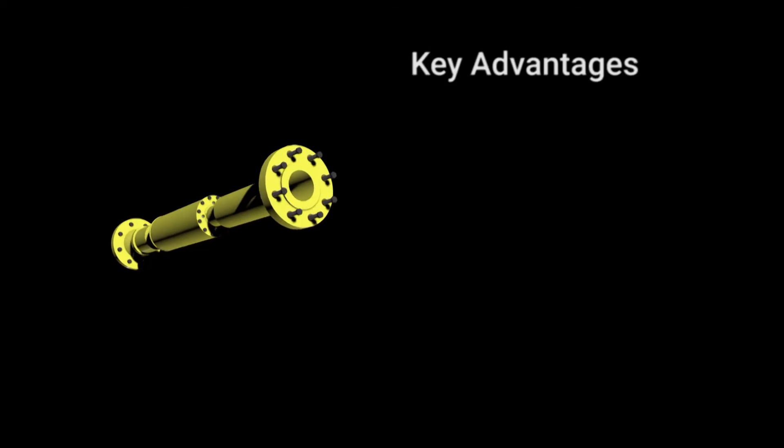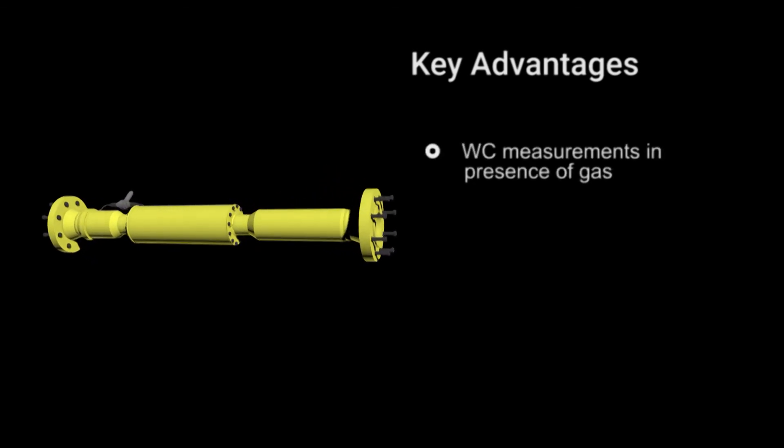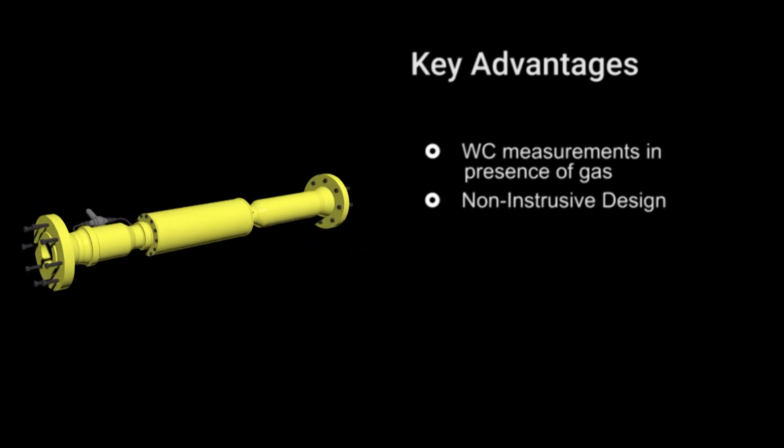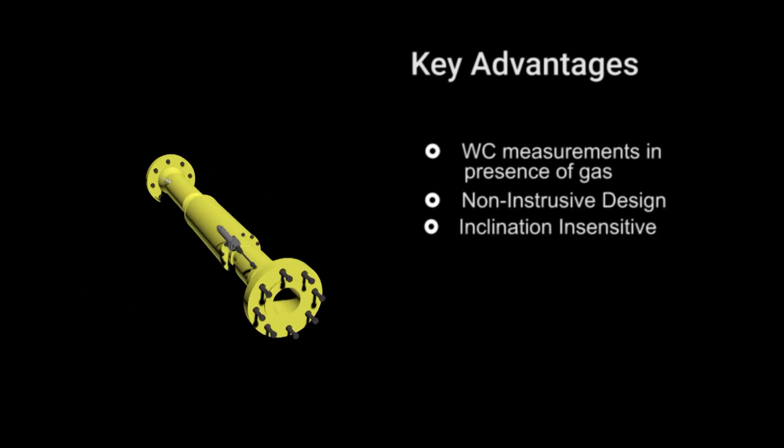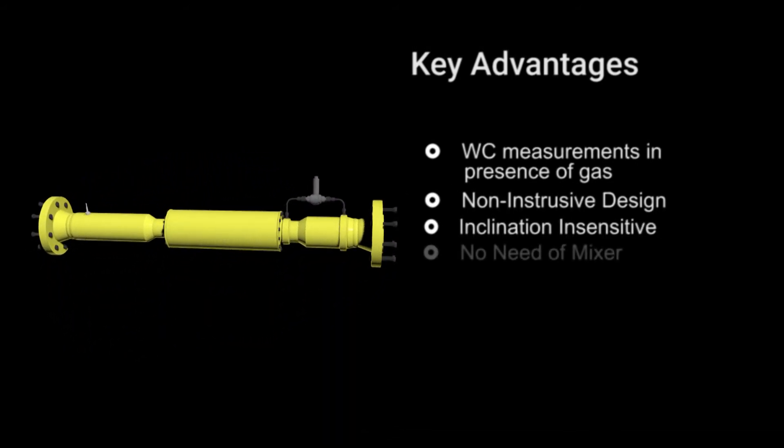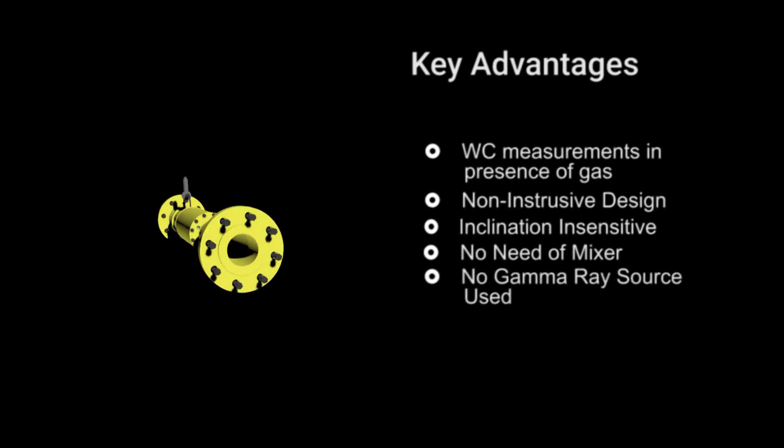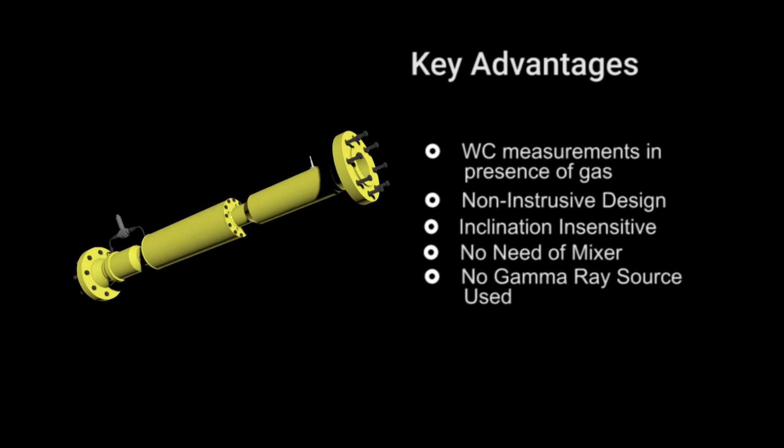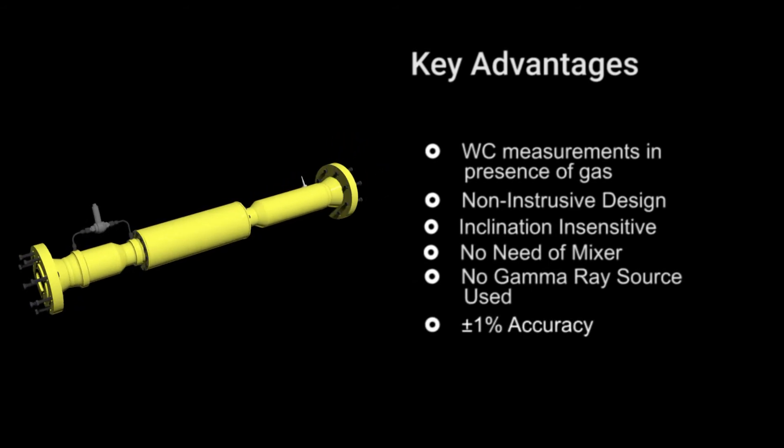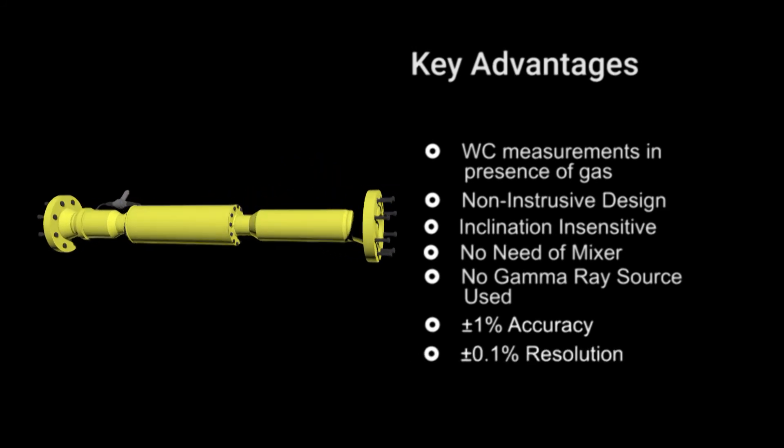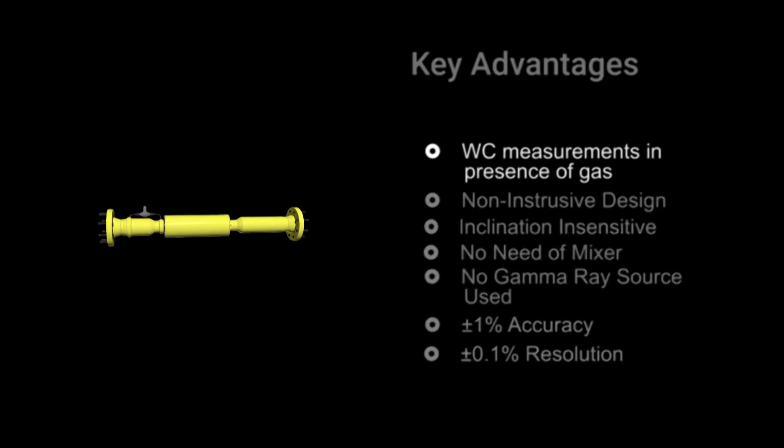To summarize, Waventuri offers many key advantages including the operation over full range of water cut without intruding the flow. Waventuri is capable of sensing the water cut and GVF independent of the flow regime without requiring any mixer or hazardous gamma-ray source. Keeping all these advantages in place, the meter offers high accuracy of plus minus one percent and a resolution of plus minus point one percent.